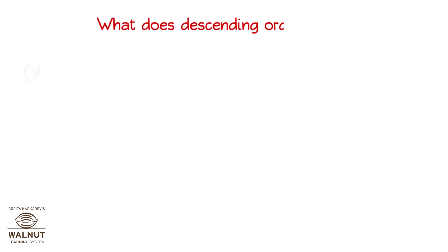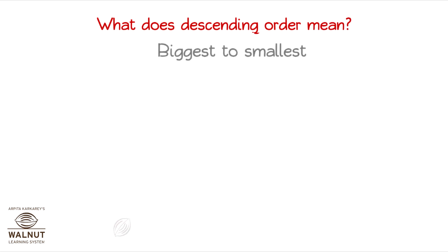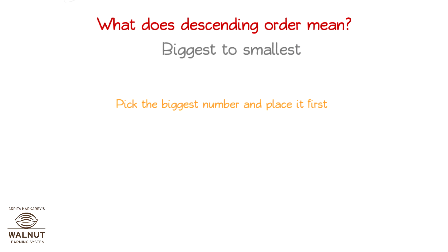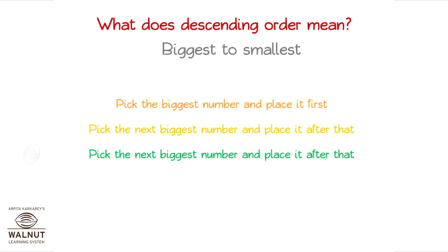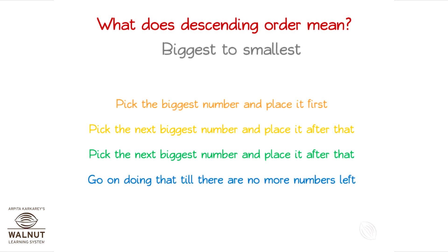When we have to arrange numbers in descending order, what do we do? These are the steps to follow. Pick the biggest number and place it first. Pick the next biggest number and place it after that. Go on doing that till there are no more numbers left.